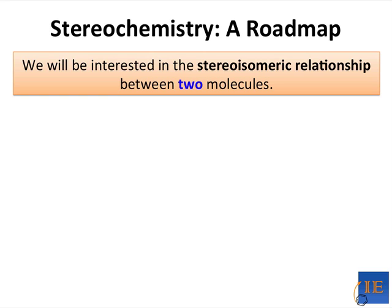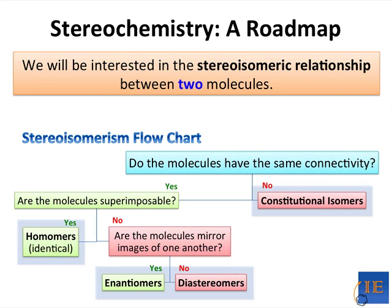To start things off, we're interested in the stereoisomeric relationship between two molecules, and determining this relationship is easy if you follow a systematic process. The first big question is: do the molecules have the same connectivity? Then we'll talk about whether the molecules are superimposable. If they are superimposable, they're identical molecules. If not, we ask: are they mirror images of each other? This allows us to identify four kinds of isomers: homomers, enantiomers, diastereomers, and constitutional isomers.